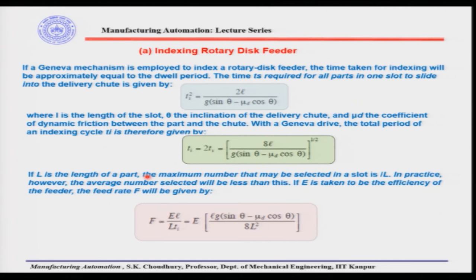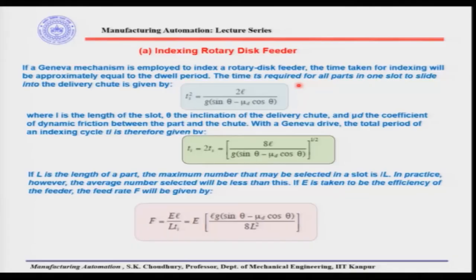For the indexing rotary disk feeder, if a Geneva mechanism is employed, the time taken for indexing is approximately equal to the dwell period — so both times are assumed equal. The time Ts required for all parts in one slot to slide into the delivery chute is given by the standard equation relating length and acceleration.